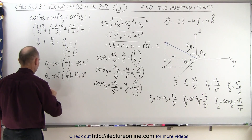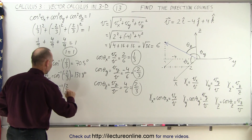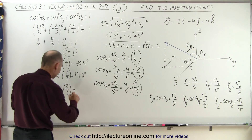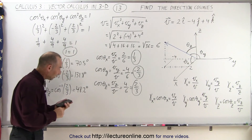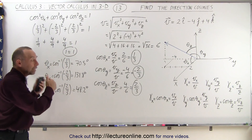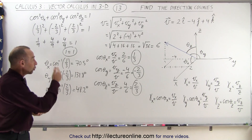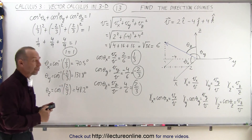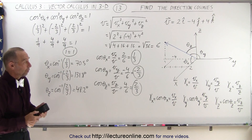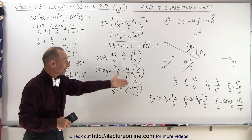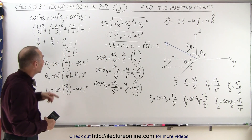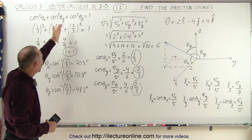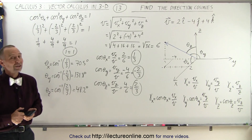And finally, theta sub z equals the inverse cosine of positive 2 thirds. So 2 divided by 3, take the inverse cosine — that gives us 48.2 degrees. Notice conceptually that the angles are not the direction cosines; the direction cosines are the cosines of those angles. Taking the inverse cosine of the three direction cosines gives us the three angles. The direction cosines are numbers between negative 1 and 1, and to verify them we plug them into the sum-of-squares equation. That's how we find the direction cosines.